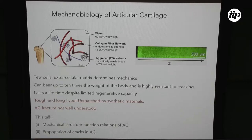Cartilage is a very soft tissue. It's about a few millimeters thick, and it's mostly made up of water and also collagen and proteoglycans. The major type of proteoglycans here is aggrecan. And once we become adults, our cartilage tissue has very few cells.